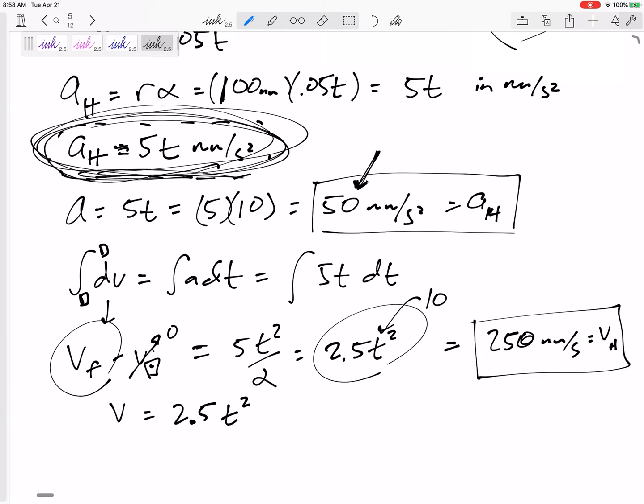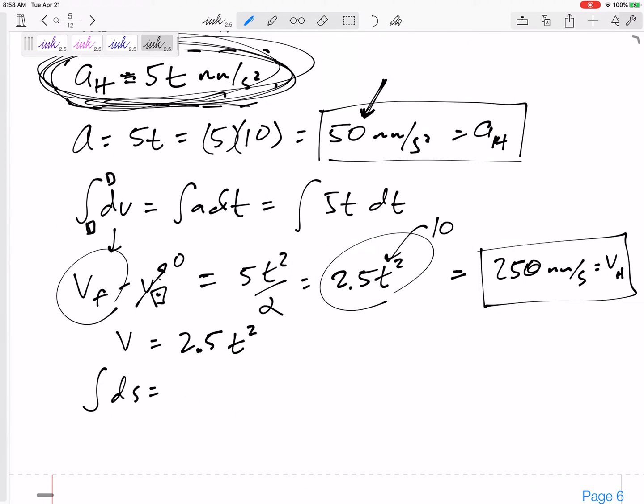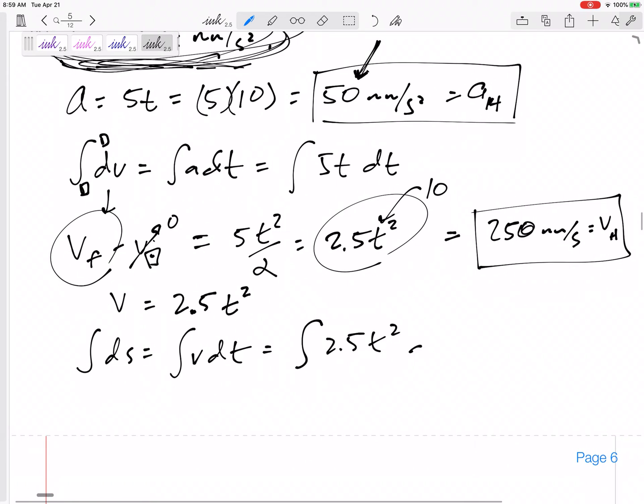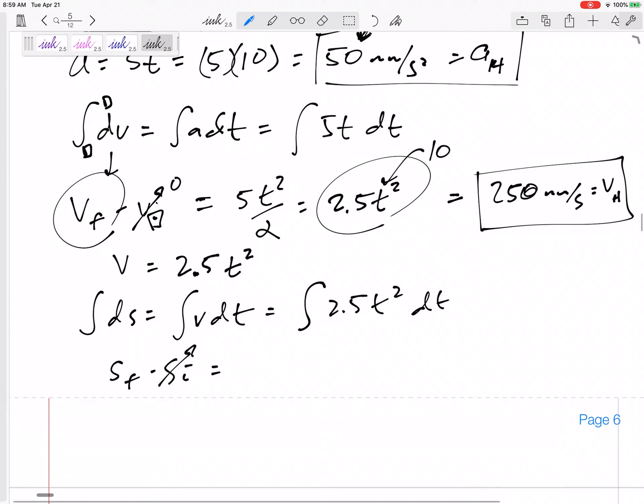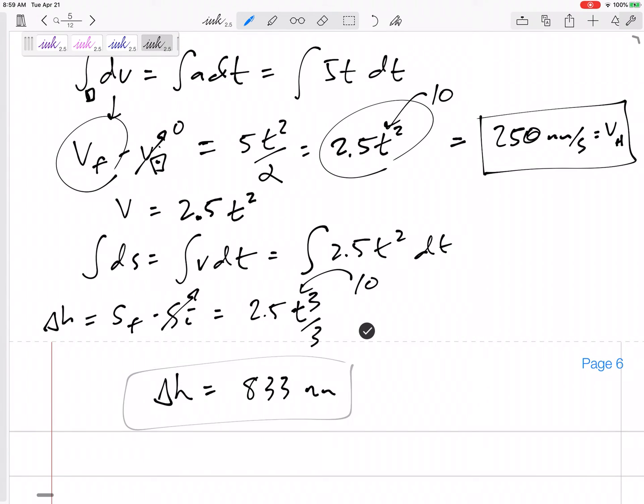Integral ds equals integral v dt. So the integral of 2.5t² dt. This is s_final minus s_initial, which is the change in height, or you can think of this as zero, or just think of this as Δh, change in height. Let's see, t³ over 3—2.5t³ over 3. And if I'm interested when t is equal to 10, my change in height is 833 millimeters. 833 millimeters is the change in height.